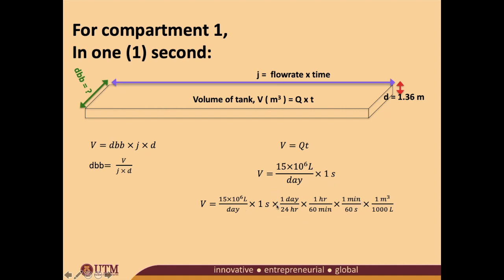We apply the conversion factors: days cancel with days, seconds cancel with seconds, minutes cancel with minutes, and hours cancel with hours — ending up with liters. We then convert liters to cubic meters using another conversion factor. If you do that calculation, the volume comes out to approximately 0.176 cubic meters.